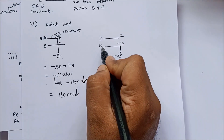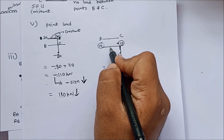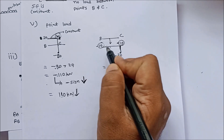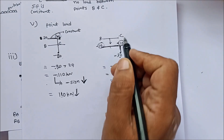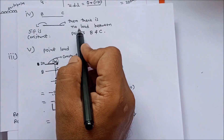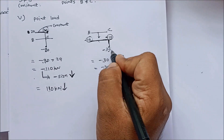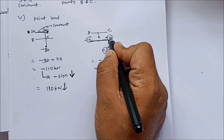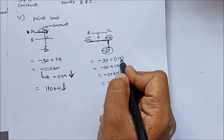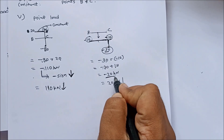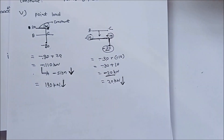Always work from the left side. Between B and C the shear force is constant at minus 10, which is below the line so taken as negative. Since it is constant, there is no load between B and C. At point C the shear force changes from minus 10 to minus 30. Final condition is minus 30, initial is minus 10. Point load equals final minus initial: minus 30 minus (minus 10) equals minus 30 plus 10 equals minus 20 kN. The negative sign shows the point load acts downward — 20 kN downward.